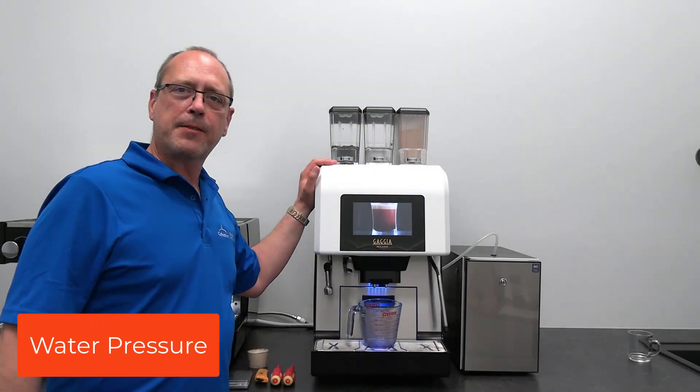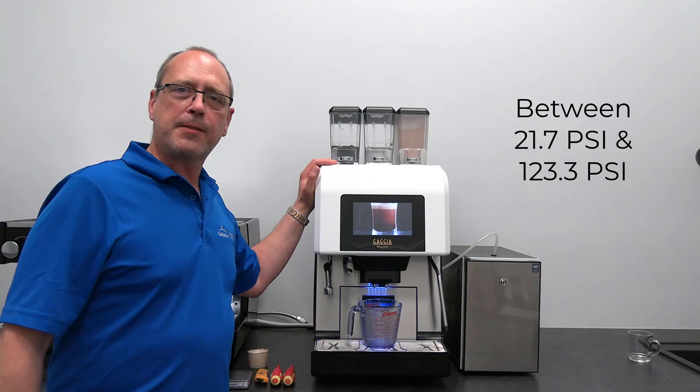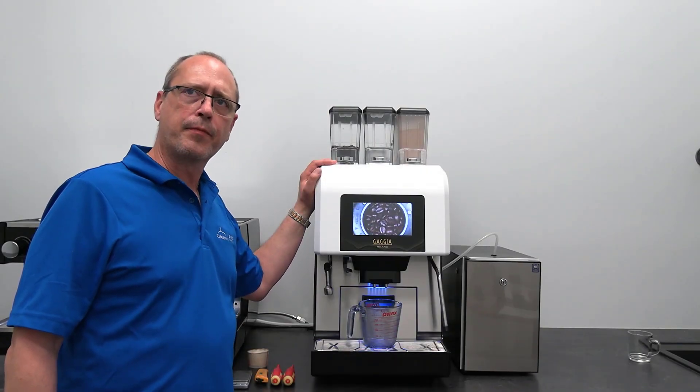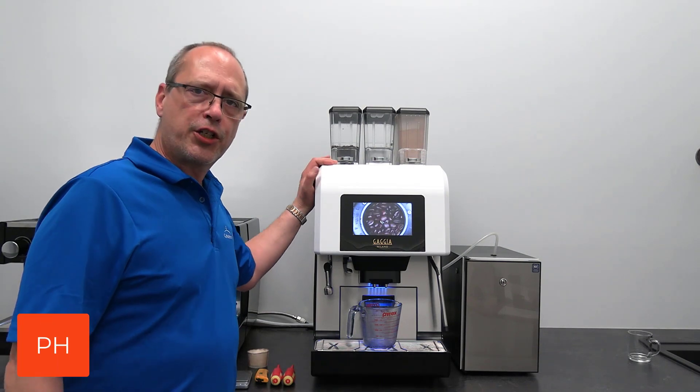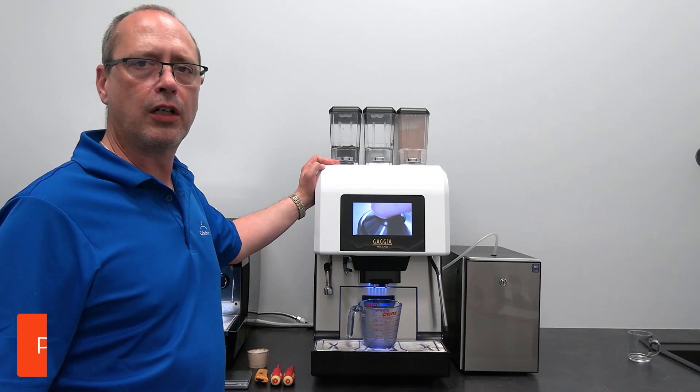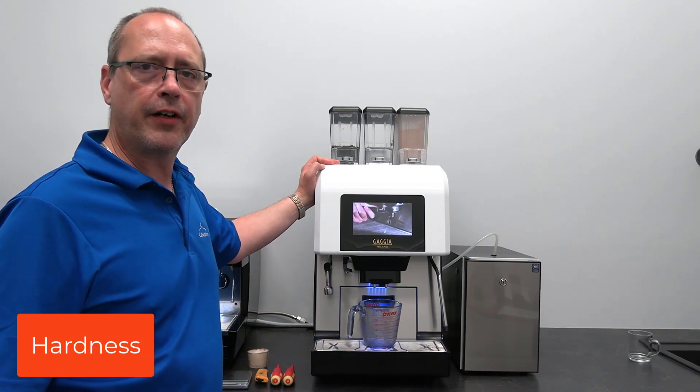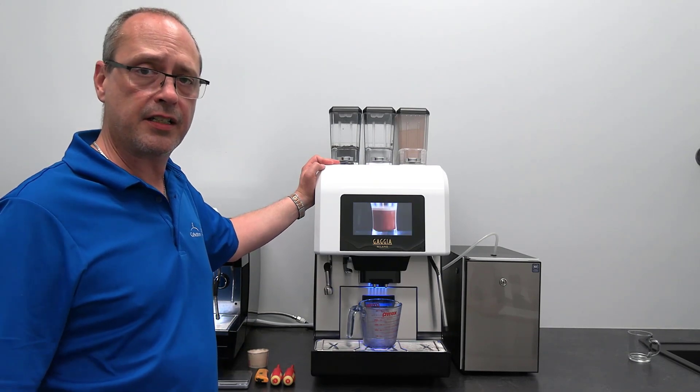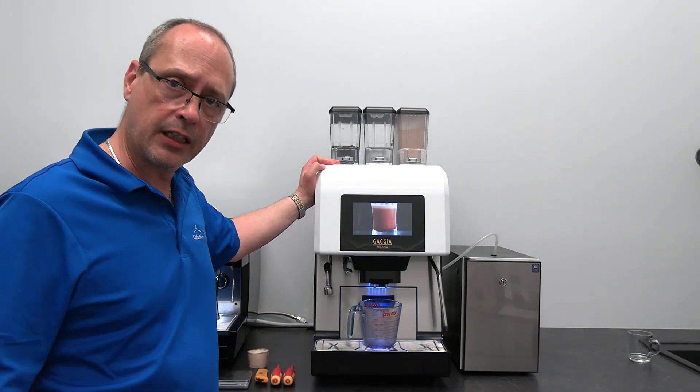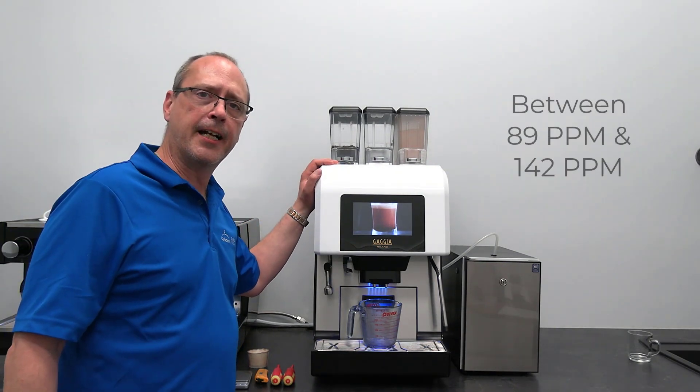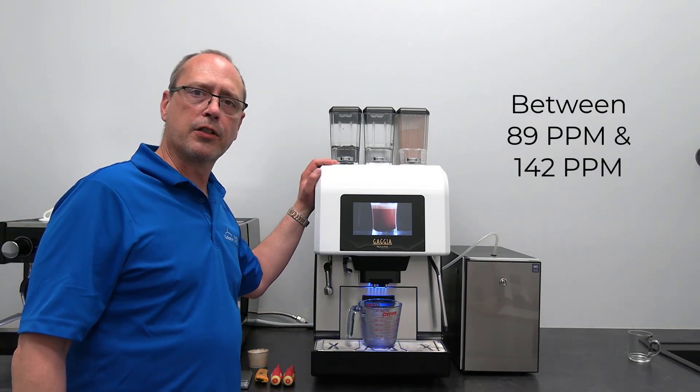Water pressure must be between 21.7 and 123.3 pounds per square inch. It should be cold tap water. pH range should be between 6.5 and 7.5. The total hardness required for this machine, considering it's an espresso machine that will affect the taste and drinks that come out, should range between 89 and 142 particles per million.